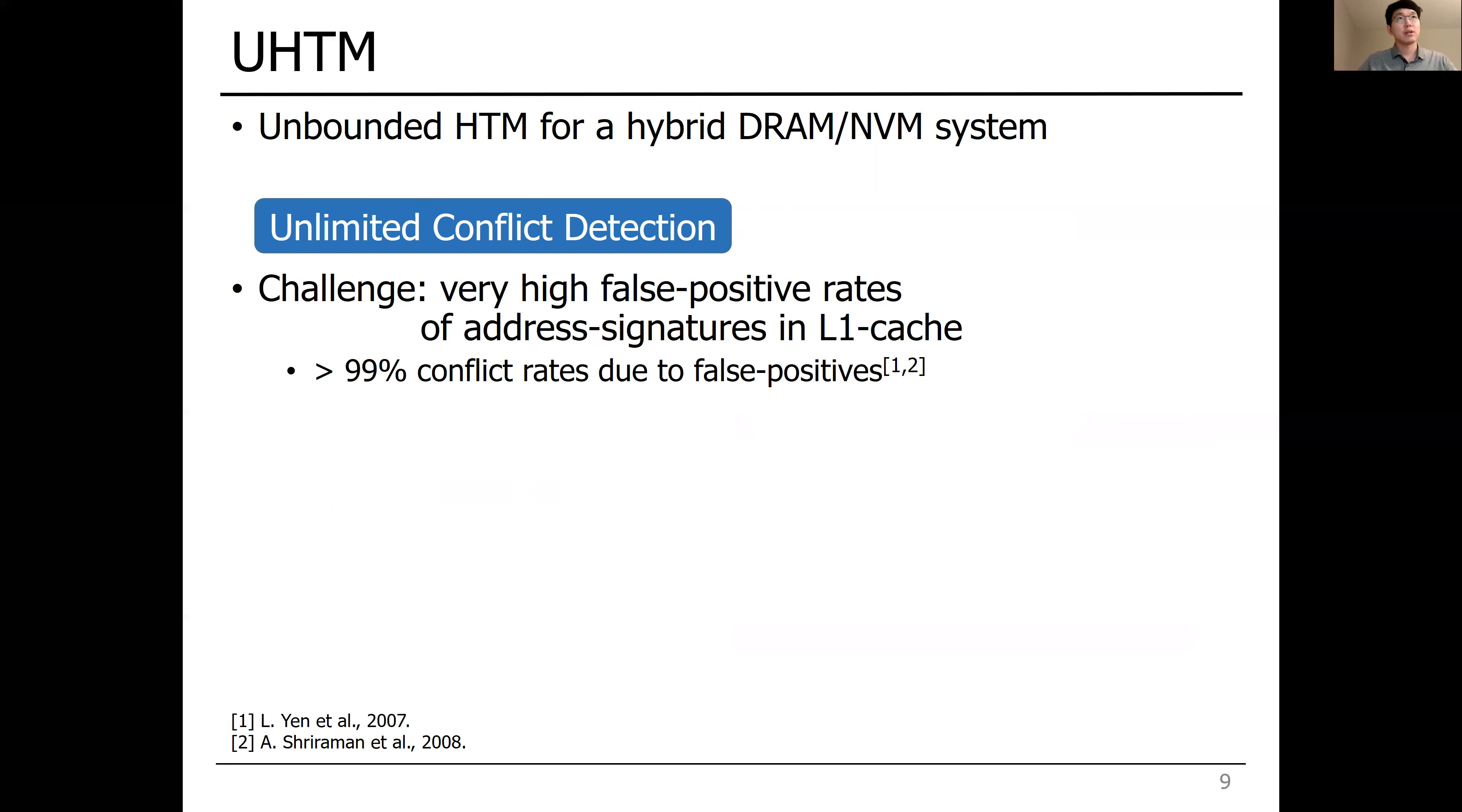But the challenge to achieve the first goal is the very high false-positive rate of signatures. We observed that more than 90% of transactions conflicted due to false-positives in L1 cache signatures, ending up with serializing them for forward progress.